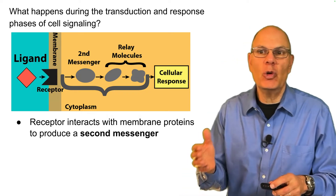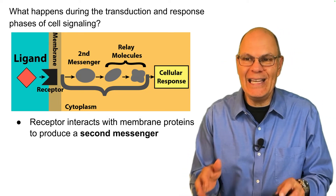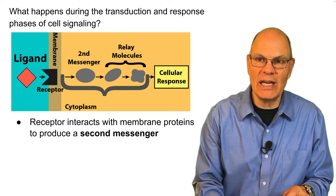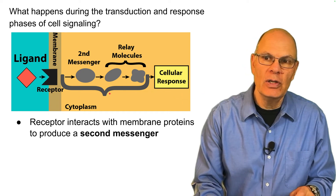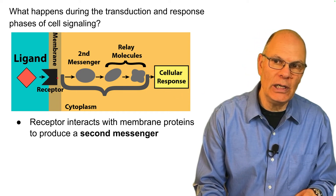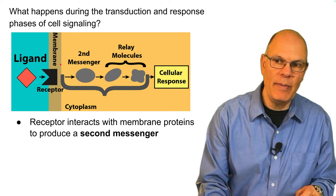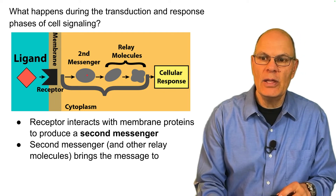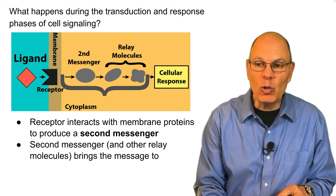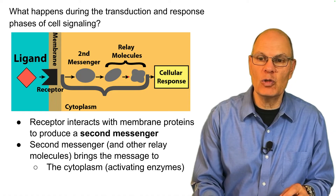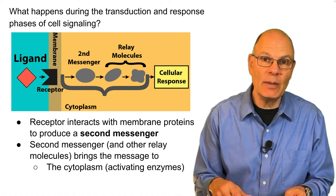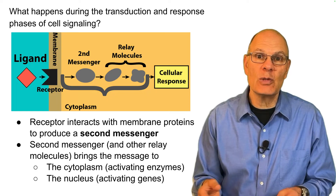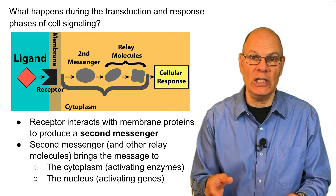During the transduction phase, the receptor interacts with membrane proteins to produce a second messenger. The second messenger, along with other relay molecules, brings that message to the cytoplasm, activating enzymes, or to the nucleus where genes are activated.